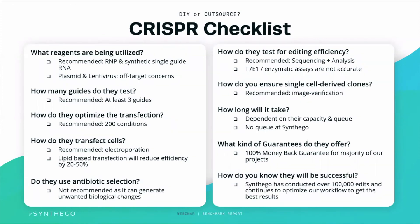Lastly, how do they know they will be successful? At Synthago, we have conducted over 100,000 edits and continue to optimize our workflow to get the very best results. How do you know you're going to get the cell lines you want and move your research forward? This checklist helps you ask the best questions and make the most educated decision — whether you outsource with us or anyone else, or decide to do it yourself.